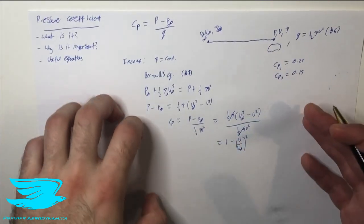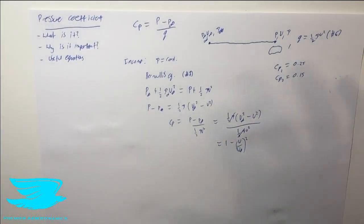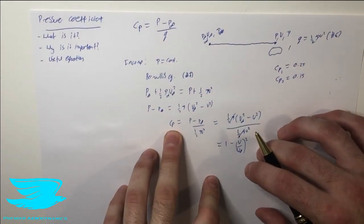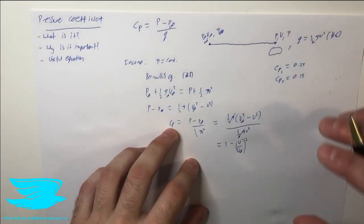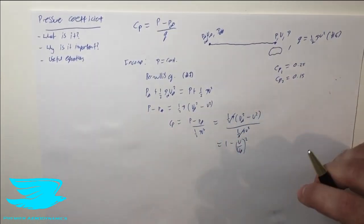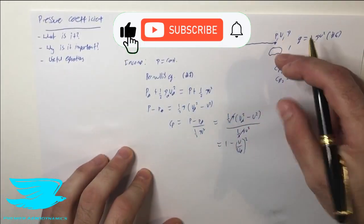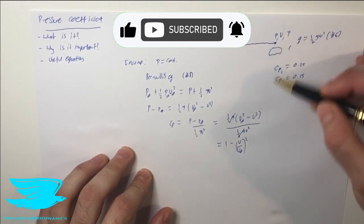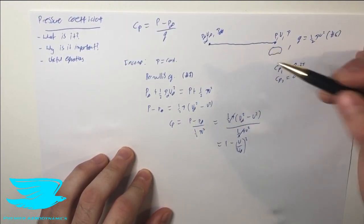So now if we know the velocities at two different points in an incompressible flow, we can calculate the pressure coefficient quite easily without having to know what the pressures are. That's a very powerful approach. If we have this kind of situation and we haven't measured the pressure but we've measured the velocities, we can figure out what the pressure coefficient change is.